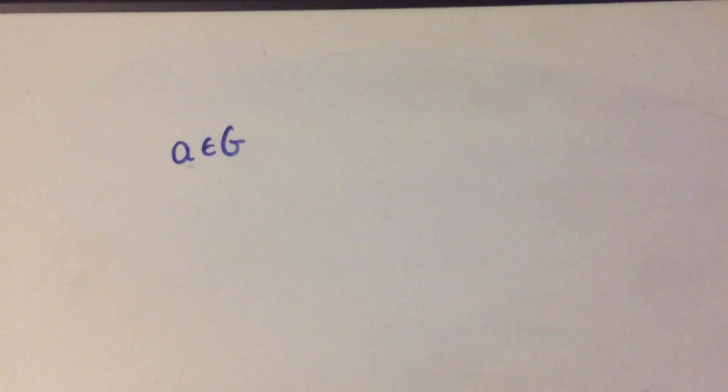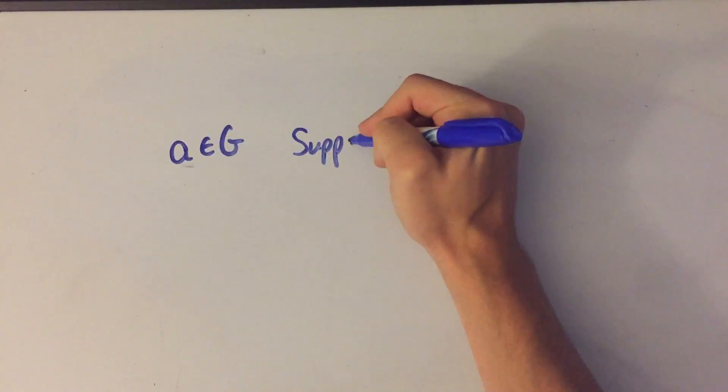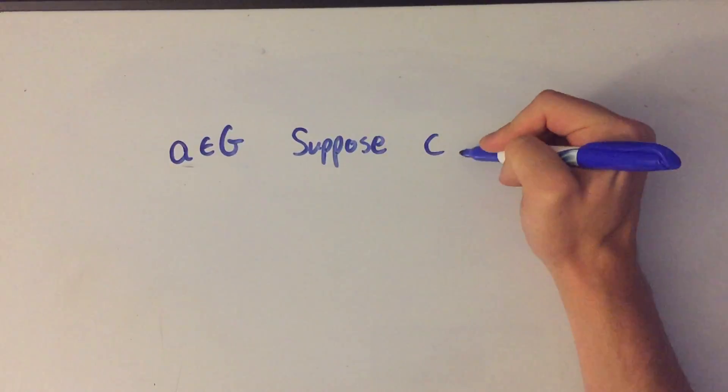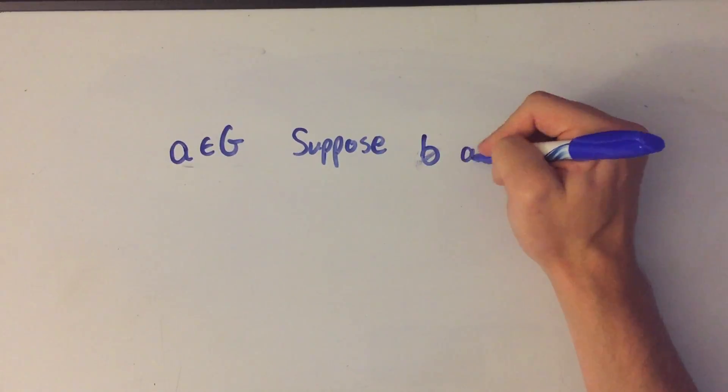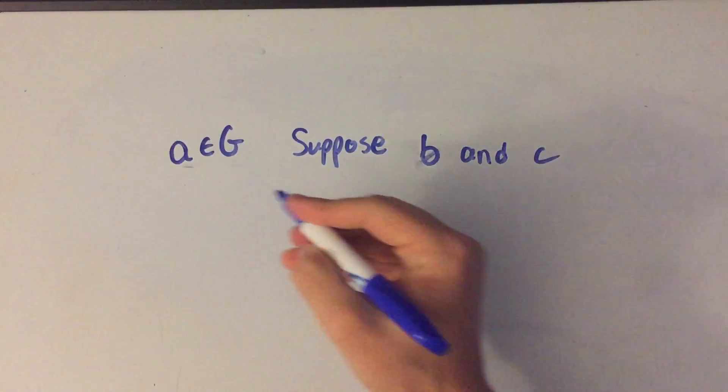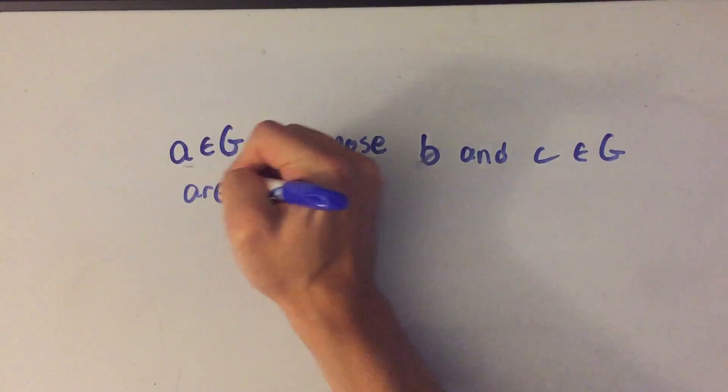So take my element A in G, and I'm going to suppose that C, let's say I should go alphabetical, let's say B and C, which are in G, are inverses of A.